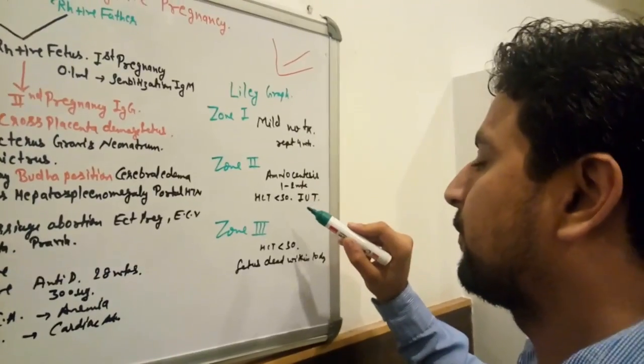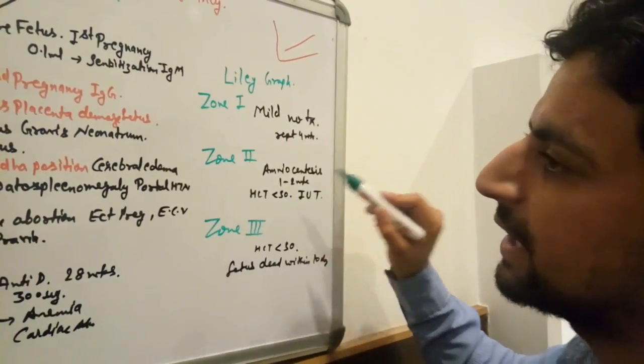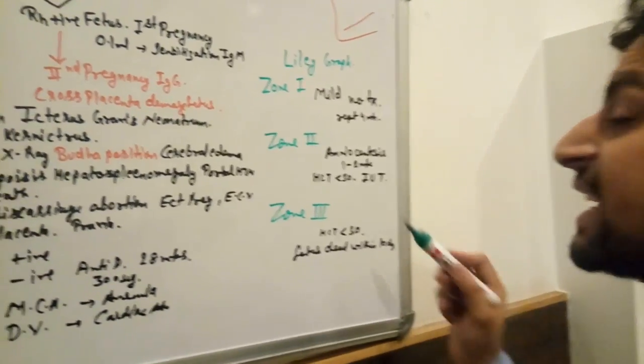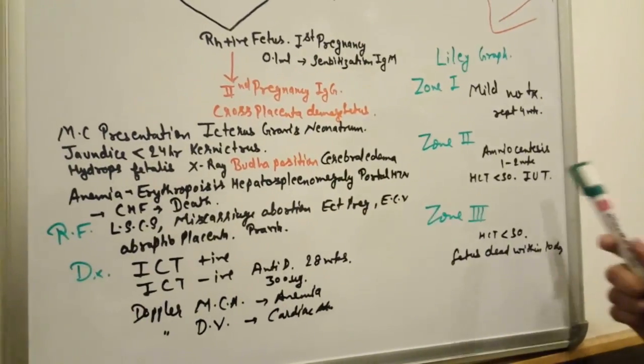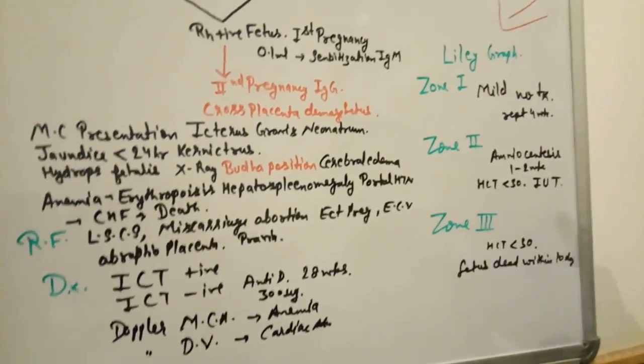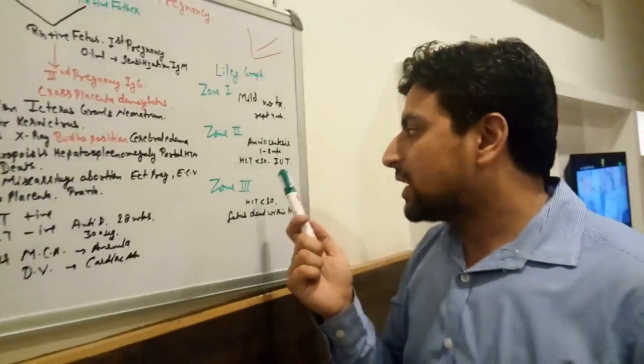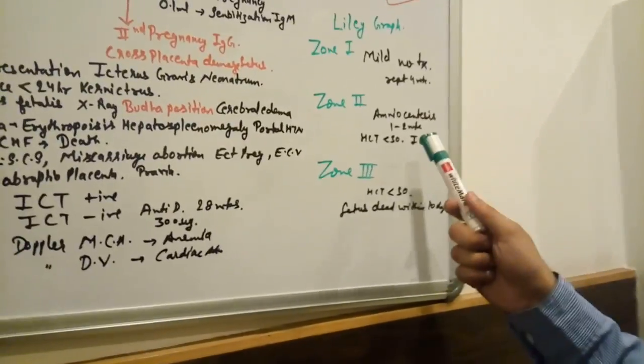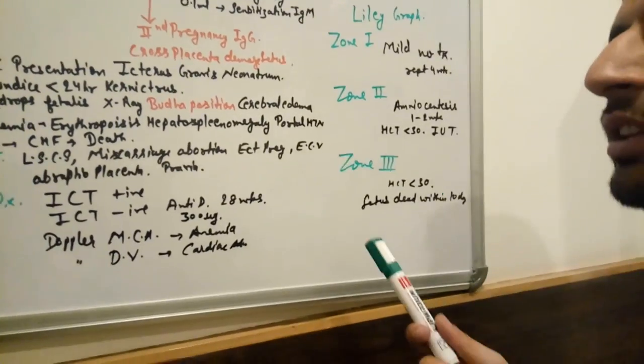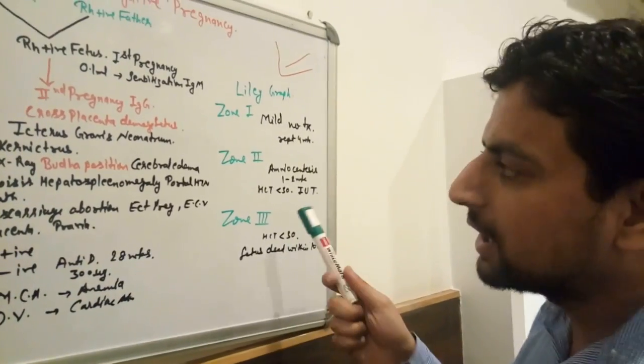In Zone 2, there is moderate phenomenon. Hematocrit level less than 30 indicates we can repeat amniocentesis every one or two weeks, but we have to give intrauterine transfusion to the fetus.